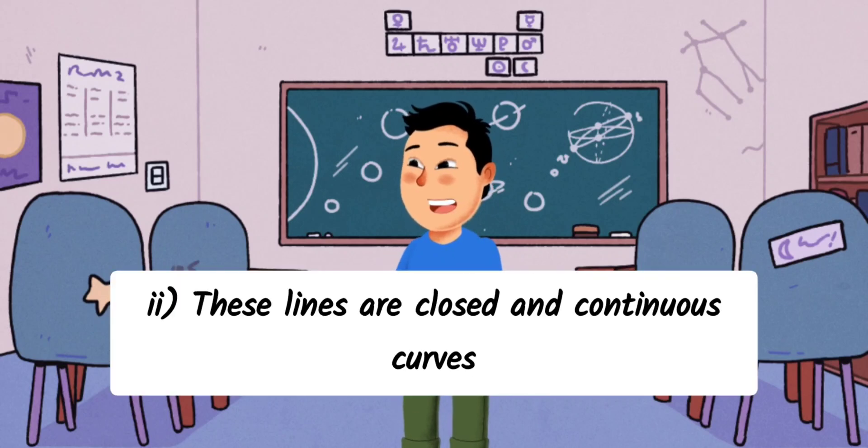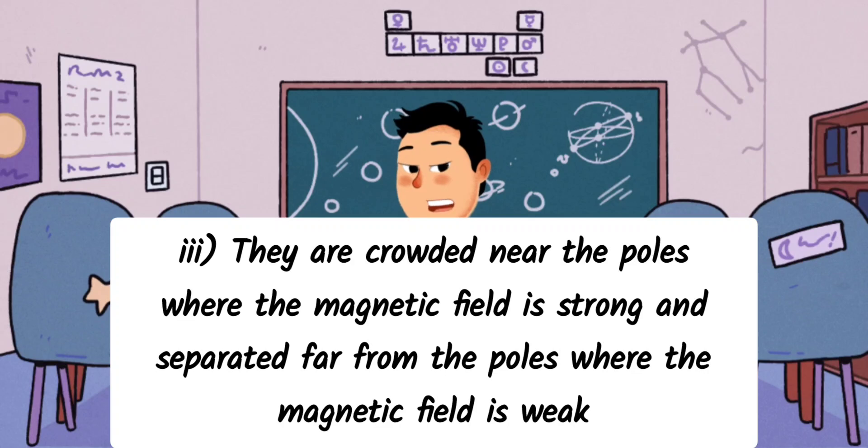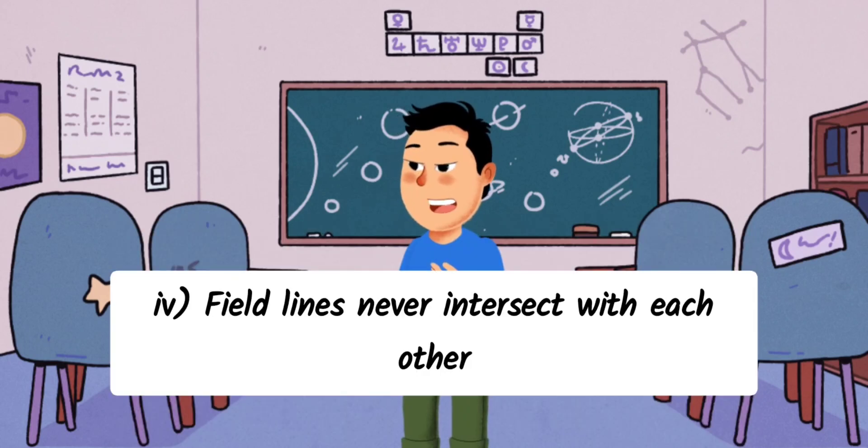These lines are closed and continuous curves. They are crowded near the poles where the magnetic field is strong, and separated far from the poles where the magnetic field is weak.